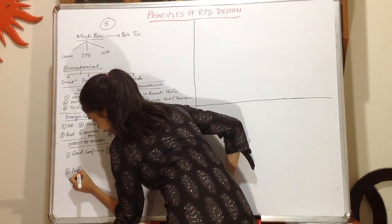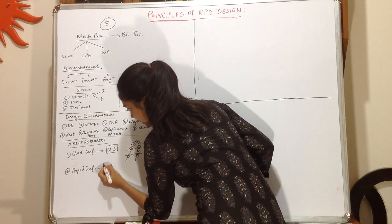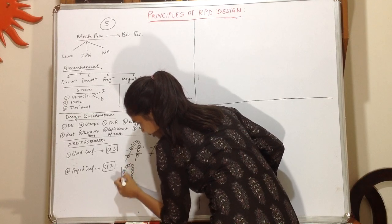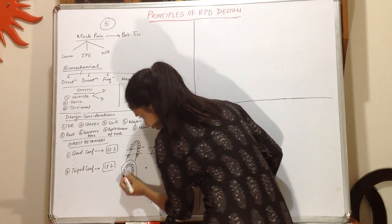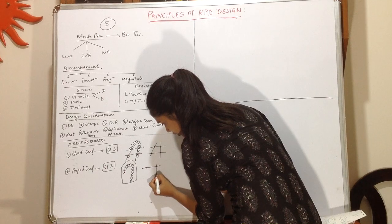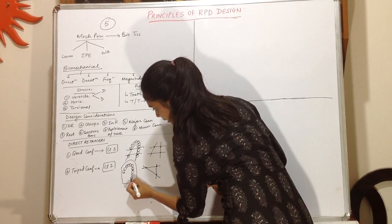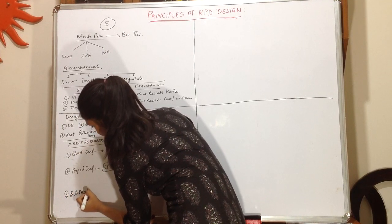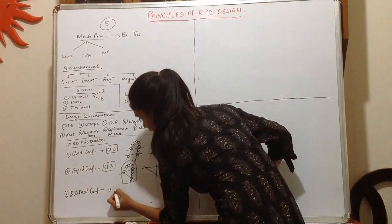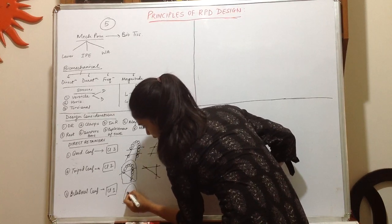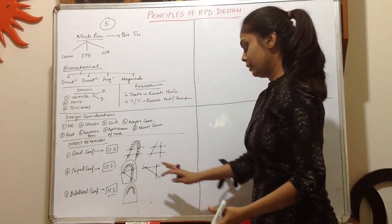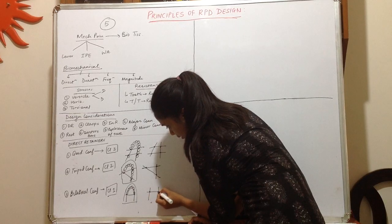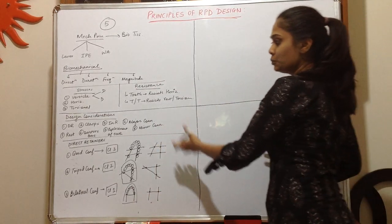The second is the tripod configuration, given in Kennedy's class 2 situations. Class 2 is a unilateral edentulous area bounded anteriorly by natural teeth. We will give direct retainers at three points to balance out the leverage forces — forming a tripod configuration. The third is the bilateral configuration, given in class 1 situations. A class 1 situation is one where there are posteriorly bilateral edentulous areas bounded anteriorly by natural remaining teeth. We give direct retainers on both sides.